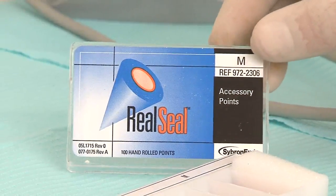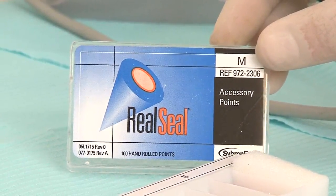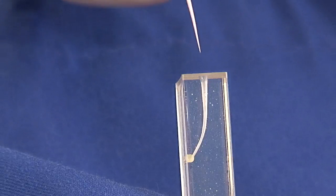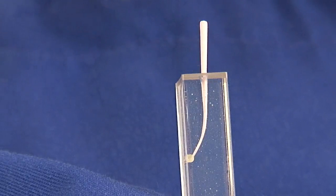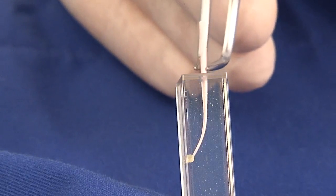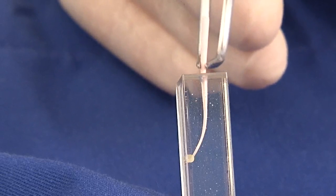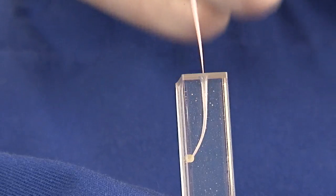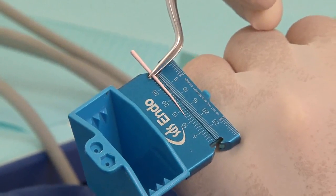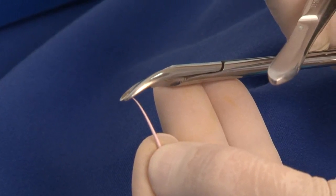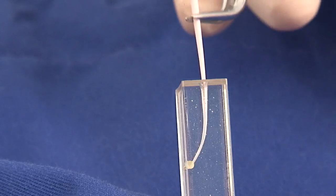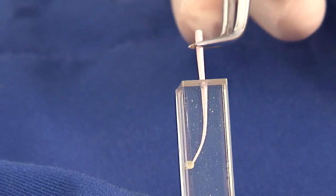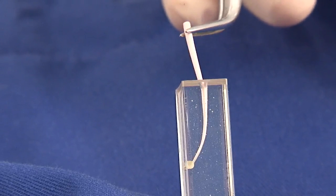The choice of a master cone. The material we are using is RealSeal. We insert the master cone to the exact working length. We try the tug back. If you don't have an appropriate tug back, we can cut like millimeter by millimeter from the master cone. And we try it back again. So it needs to be fit at the exact working length with a good tug back.